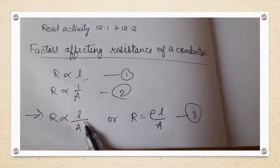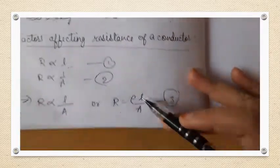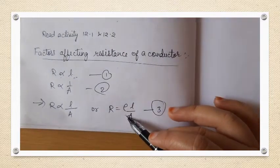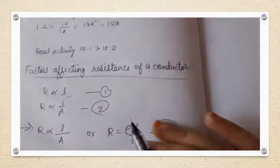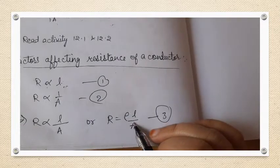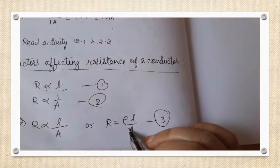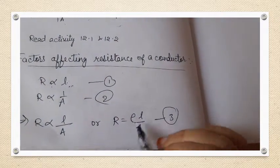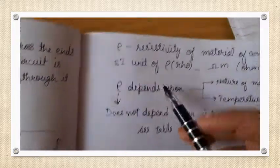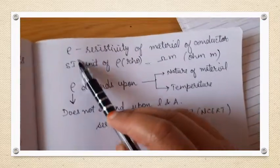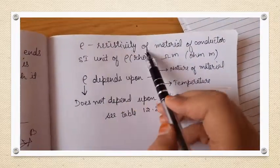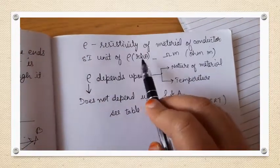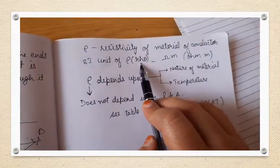Whenever we remove the proportionality sign, we put a constant of proportionality, which is rho (ρ) in this case. So the equation becomes R = ρL/A. The constant of proportionality ρ is known as the resistivity of the material of the conductor.